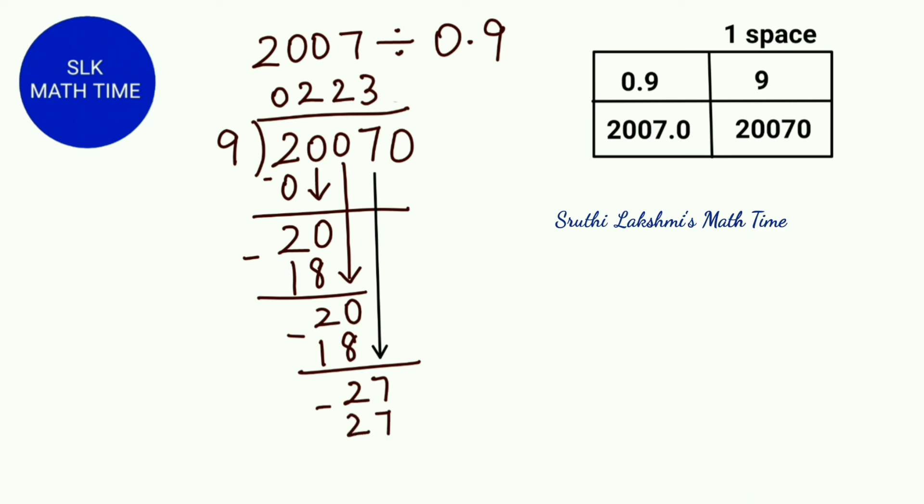9 into 3 is 27. 27 minus 27 is 0. And then see the 0 over here, we just write it above in the quotient line as it is. So our answer is 2230. Thanks for watching.